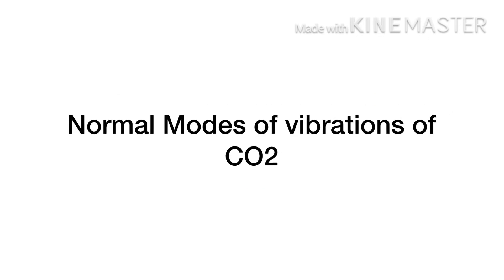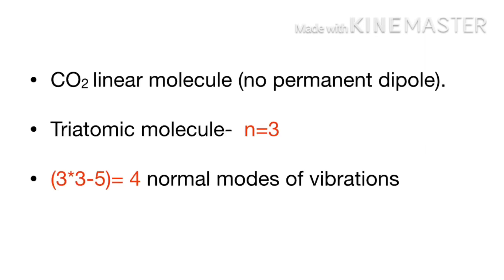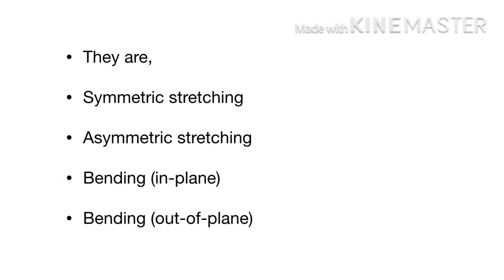Now let us see the normal modes of vibrations of the carbon dioxide molecule. Carbon dioxide is a linear molecule with n equal to 3, and it has no permanent dipole moment. For a linear molecule there will be 3n minus 5 normal modes of vibration, so for carbon dioxide with n equal to 3 there will be 4 normal modes of vibration: symmetric stretching, asymmetric stretching, in-plane bending, and out-of-plane bending.